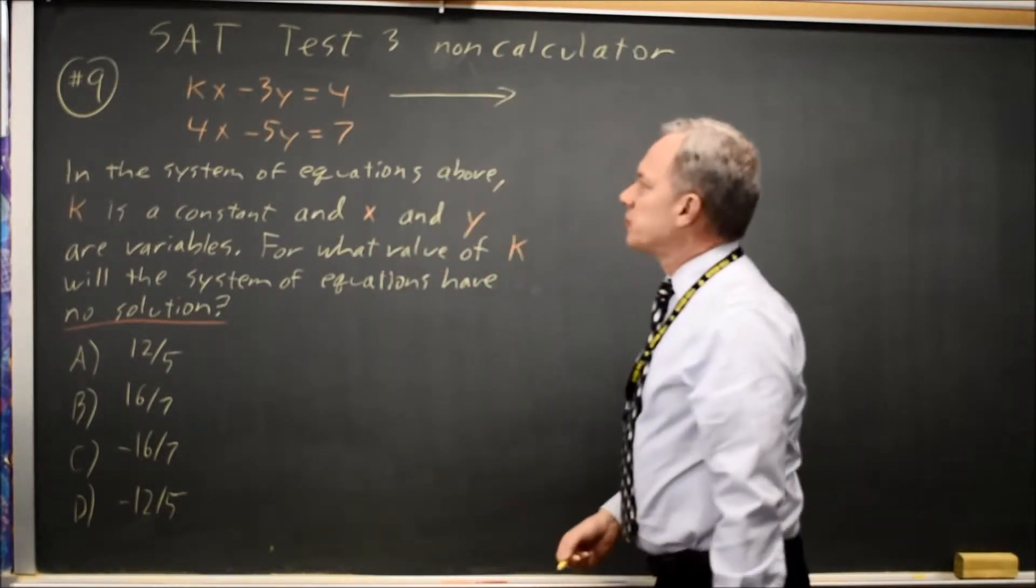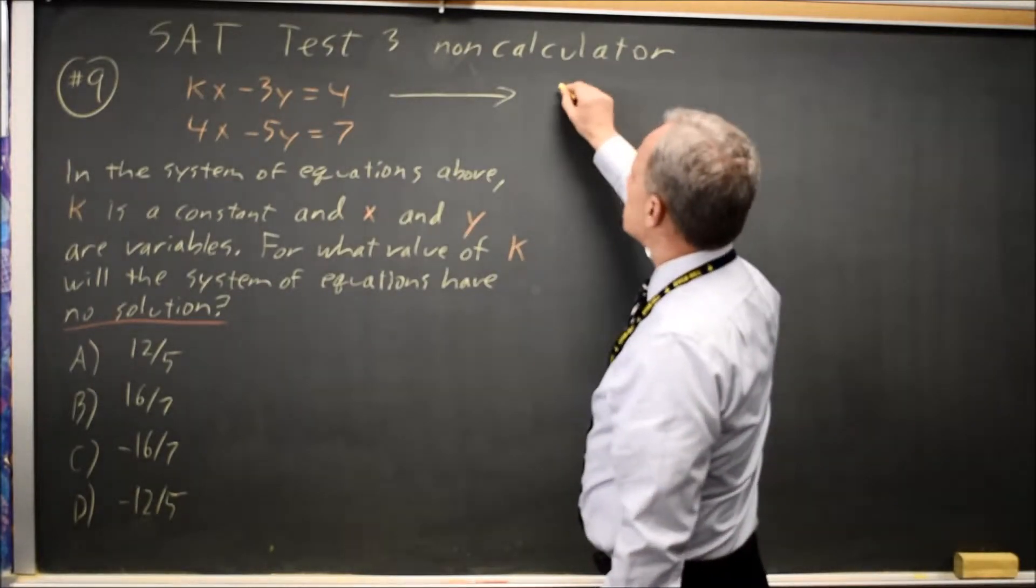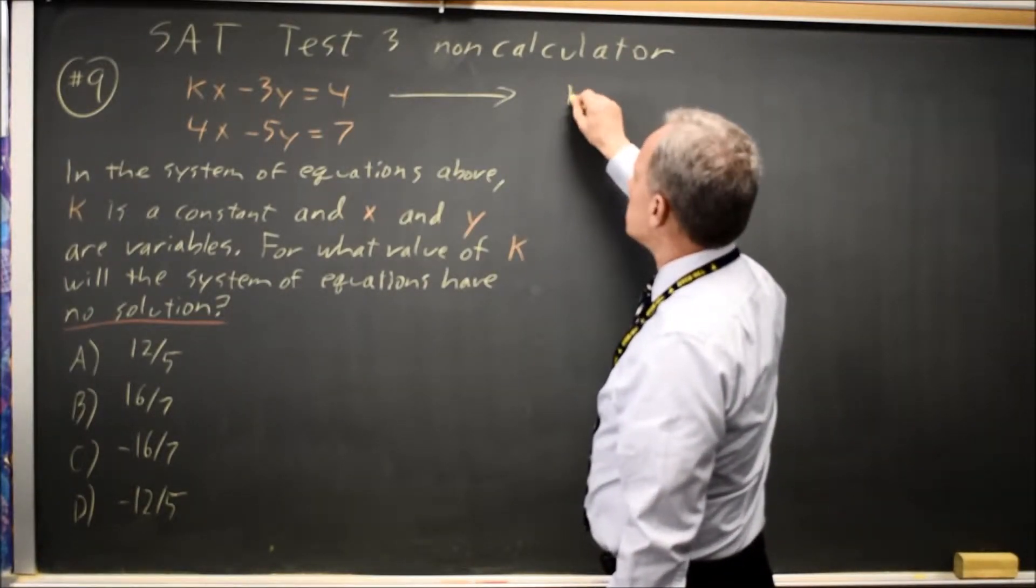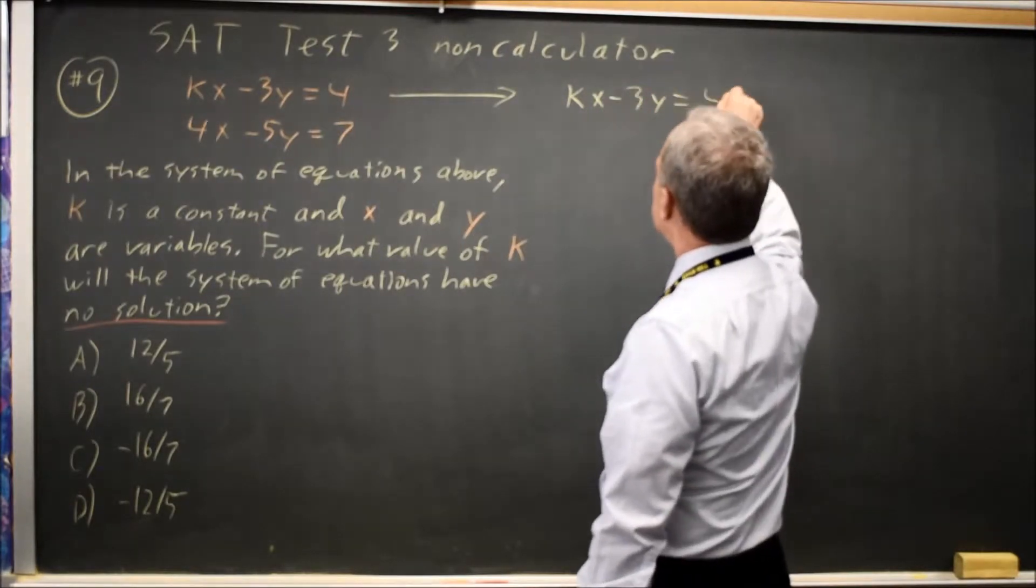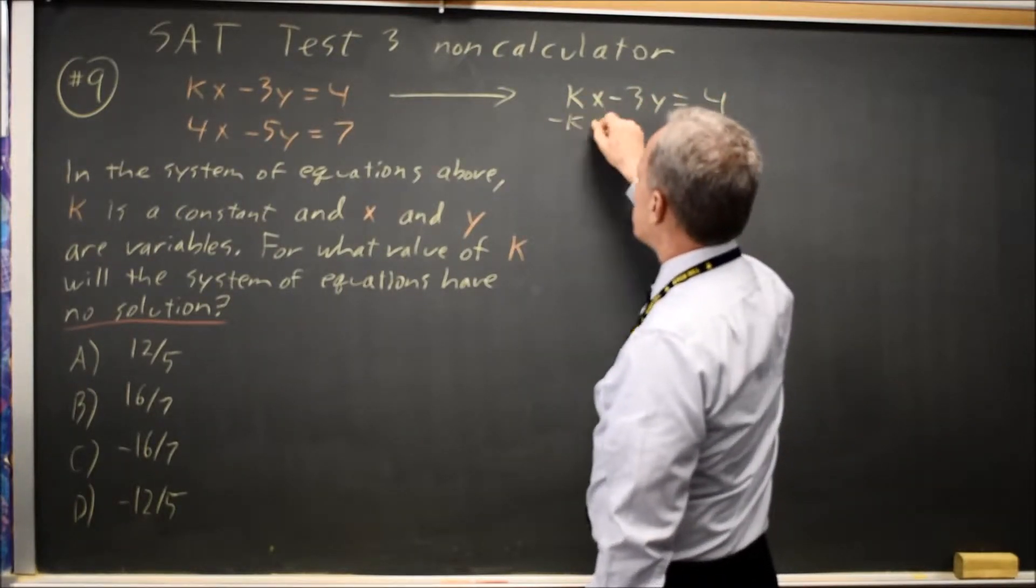For simplicity, I'm going to put these in slope-intercept form. That's not necessary, but it's the easiest way to see what we're doing. kx minus 3y equals 4. Subtract kx from both sides.